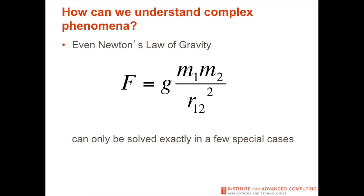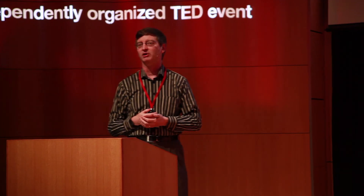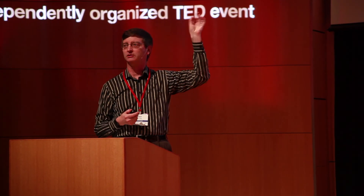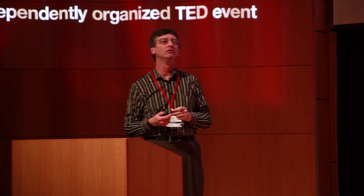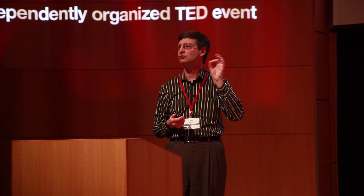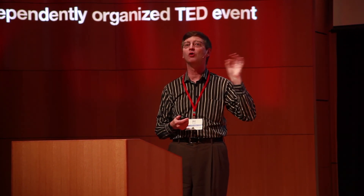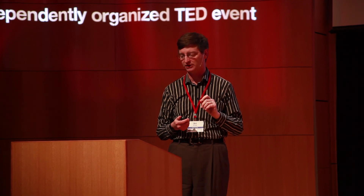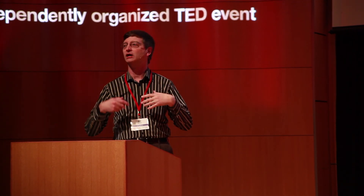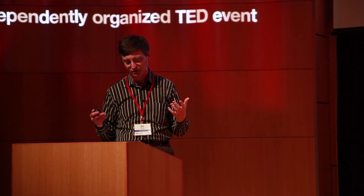This equation is actually very simple, and if I have two particles, like a planet and a sun, there are actually exact solutions. Those of you who took physics will have done those solutions. But if I had just one more particle — one more moon — except in extraordinarily special cases, no one knows exactly what the solution is. So I can only approximate it through computation.